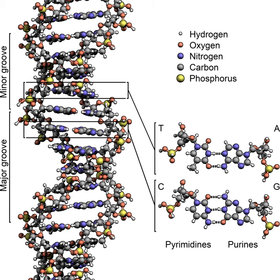Topoisomerases are enzymes with both nuclease and ligase activity. These proteins change the amount of supercoiling in DNA. Some of these enzymes work by cutting the DNA helix and allowing one section to rotate, thereby reducing its level of supercoiling. The enzyme then seals the DNA break. Other types of these enzymes are capable of cutting one DNA helix and then passing a second strand of DNA through this break before rejoining the helix. Topoisomerases are required for many processes involving DNA, such as DNA replication and transcription.